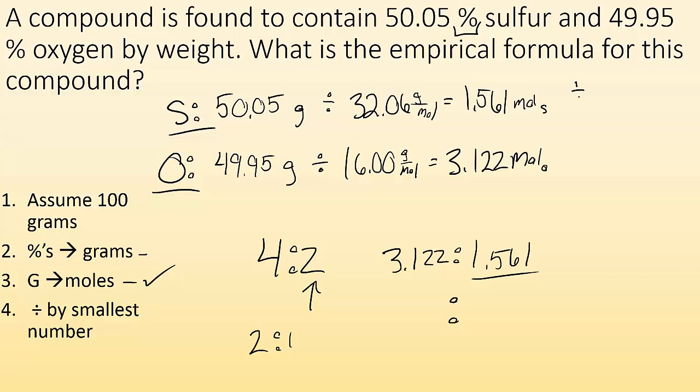So now I'm going to divide each of them by the smallest number of moles, 1.561. For sulfur, it's pretty straightforward. Divided by itself, I get 1. Oxygen, I plug and chug, and I get a number that is, if not exactly, but almost exactly, 2. So that's telling me that I have 1 sulfur and 2 oxygens. So the empirical formula would be SO2. And that is my empirical formula.